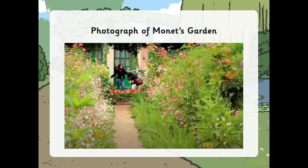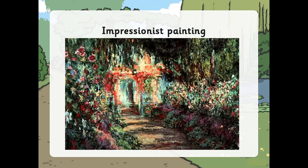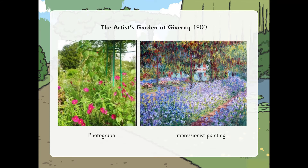This is a photograph of Monet's garden. Now let's have a look at his impressionist painting of the same thing. Think about the different paint techniques he's used and how he's mixed in the different colours. On the left you can see a photograph of Monet's garden, and on the right you can see the impressionist painting of Monet's garden.